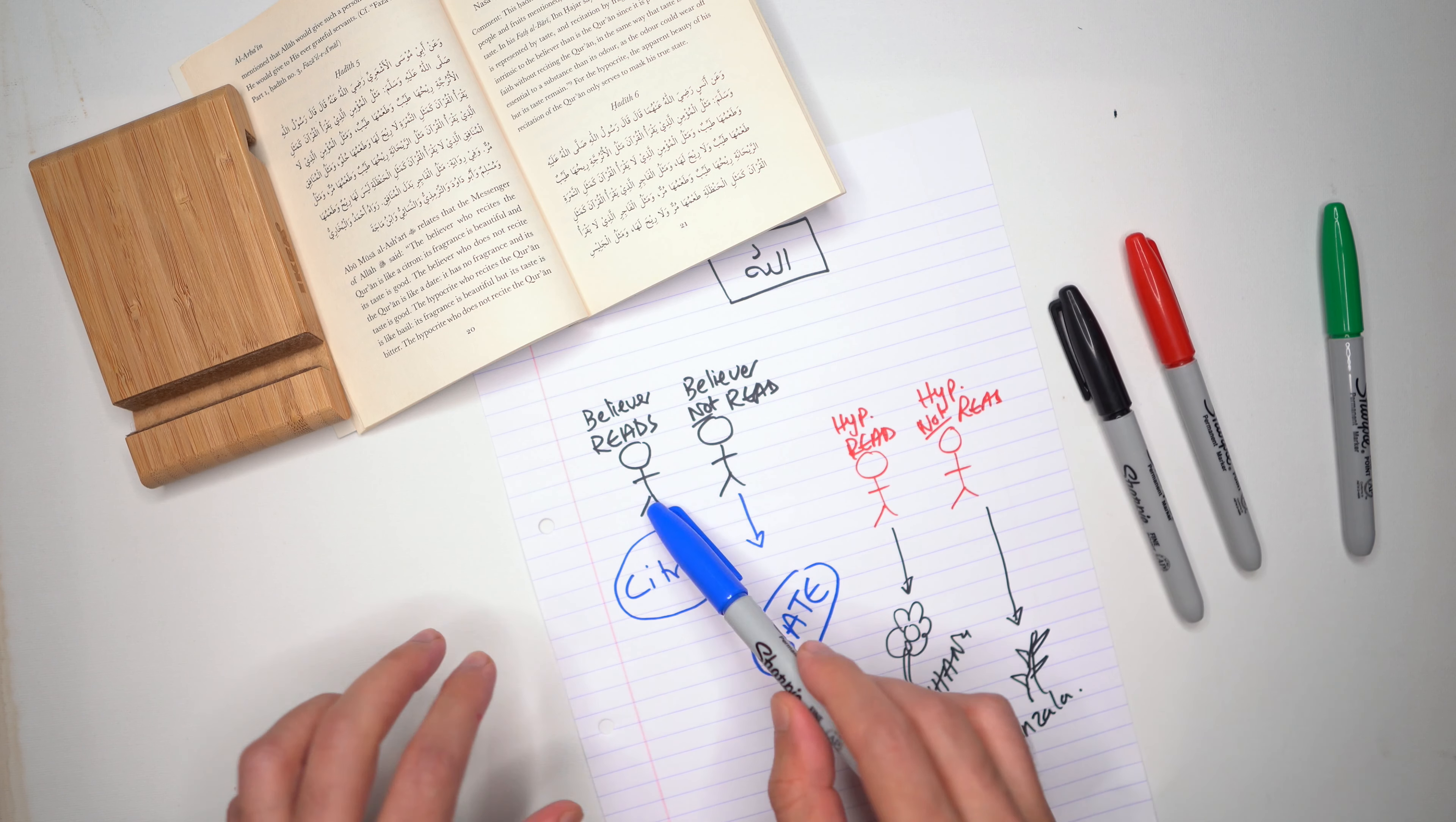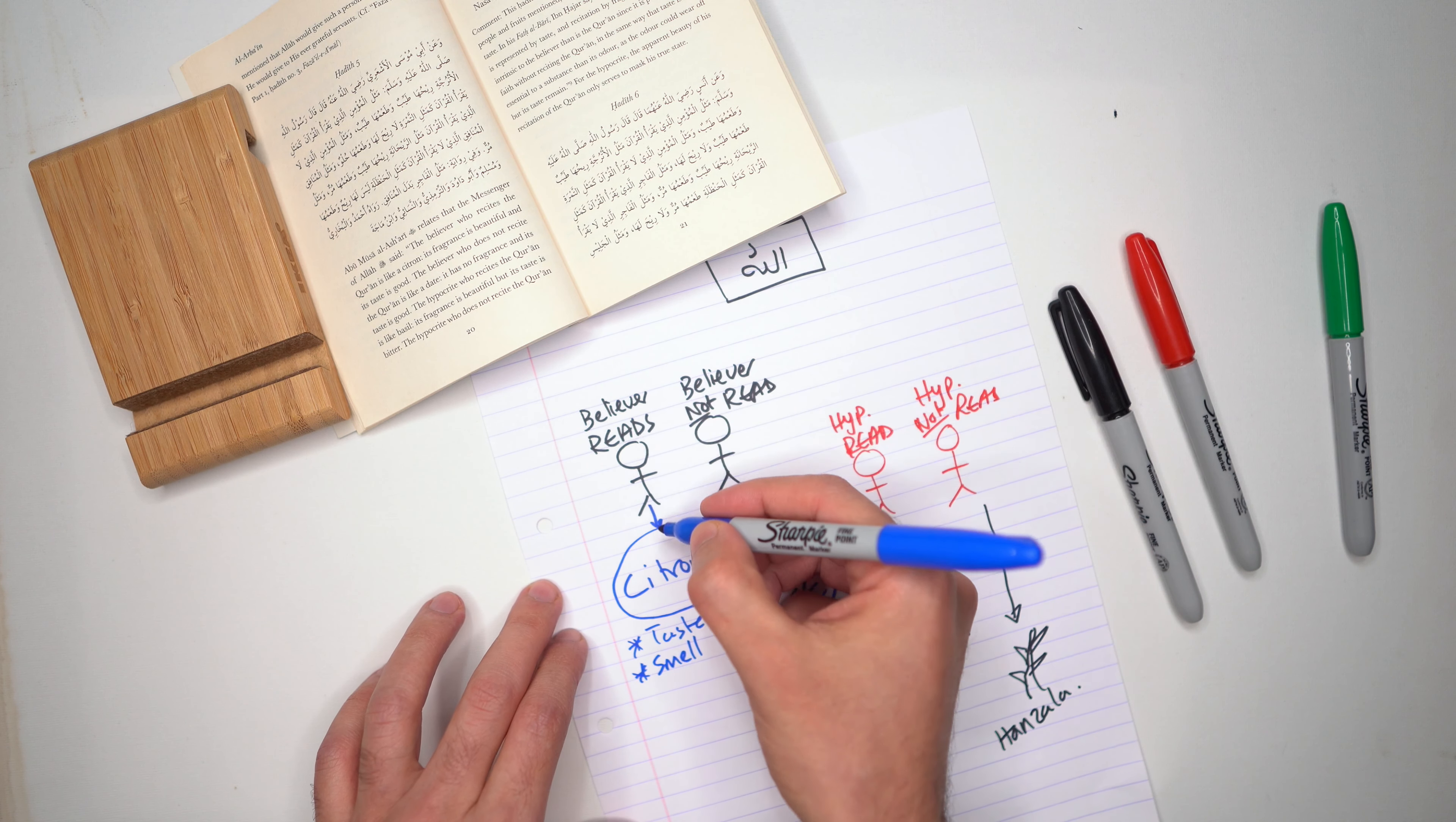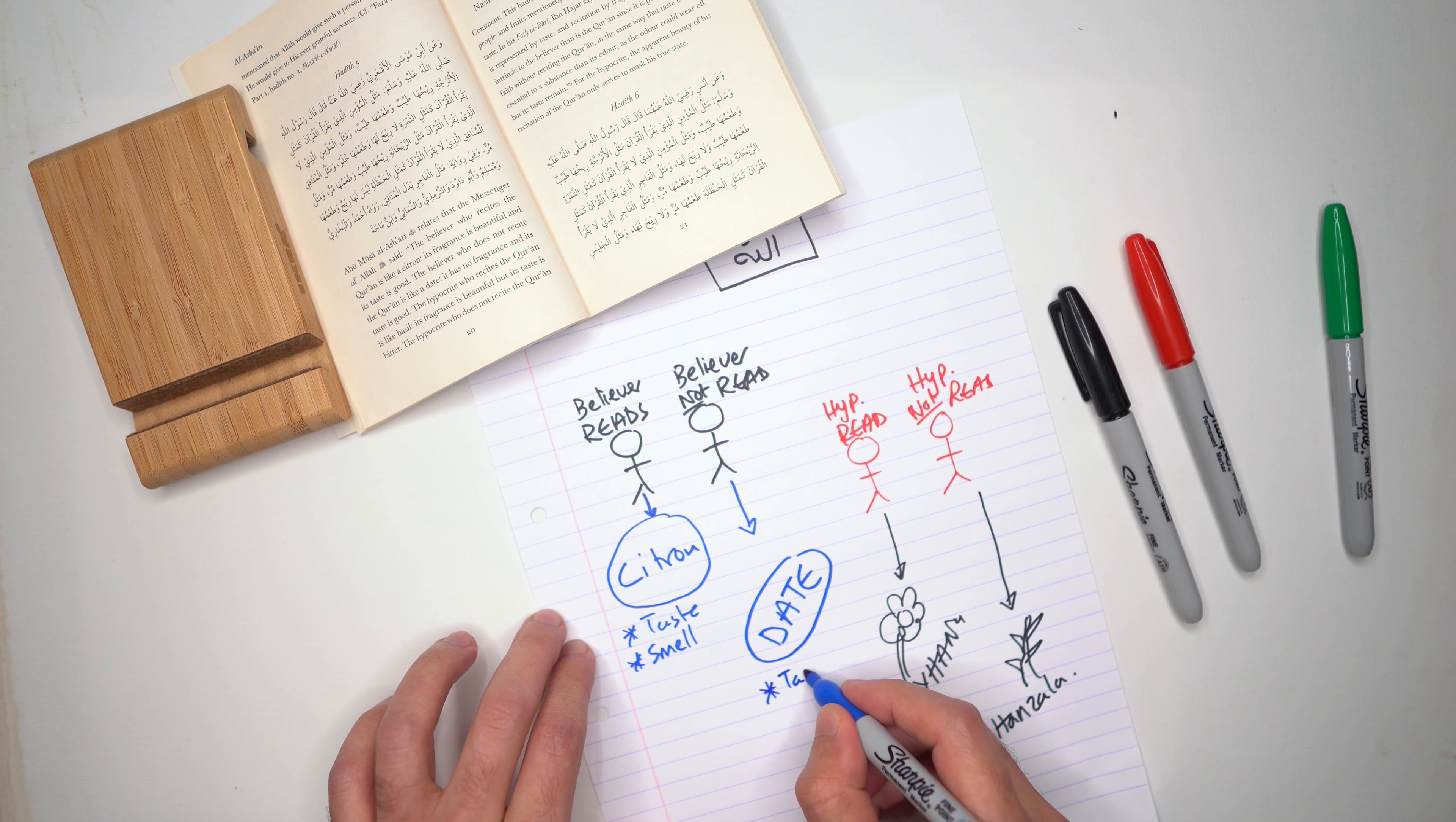If you look at this, the believer who reads the Qur'an is like a citrus fruit - it tastes nice and it smells nice. You know, if you have an orange or lemon and you open it in your house, the whole room starts to smell of lemon. It's very nice and people use these in detergents because it has a pleasant smell. By reading the Qur'an, the recitation beautifies the believer. It spreads the benefit of the Qur'an around and people can sense this beauty. A believer who doesn't read the Qur'an is not all bad - it's like a date. If you try to smell a date you probably won't be able to smell anything, but if you taste it, it tastes nice. There's no fragrance so people can't detect the beauty of the Qur'an because he's not reciting it.